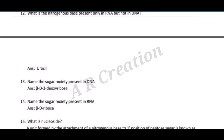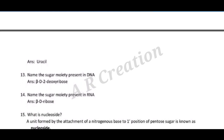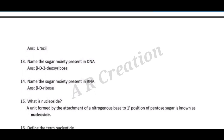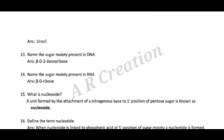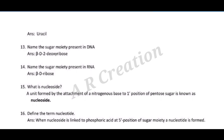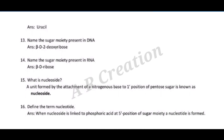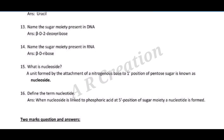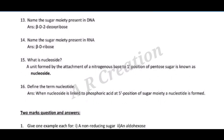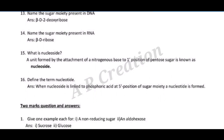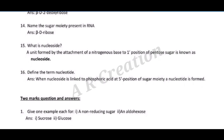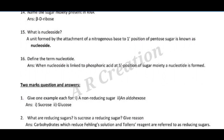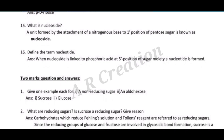Question thirteen: name the sugar moiety present in DNA. Answer: β-D-2-deoxyribose. Question fifteen: what is a nucleoside? Answer: a unit formed by the attachment of a nitrogenous base to the 1' position of a pentose sugar is known as a nucleoside. Question sixteen: define nucleotide. Answer: when a nucleoside is linked to phosphoric acid at the 5' position of the sugar moiety, a nucleotide is formed.